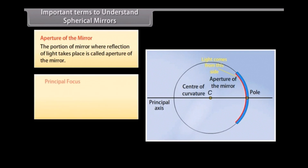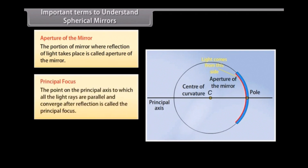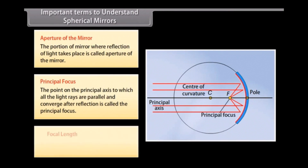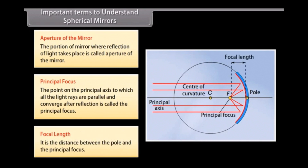The principal focus is the point on the principal axis to which all light rays, parallel to the principal axis, converge after reflection. The focal length is the distance between the pole and the principal focus of the mirror.